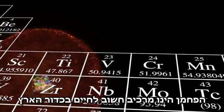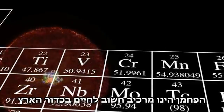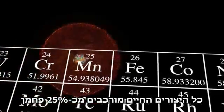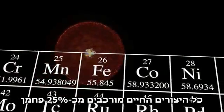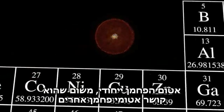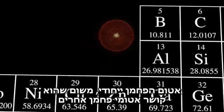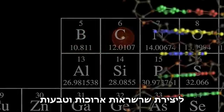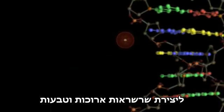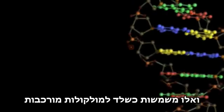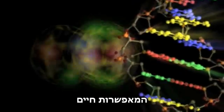Carbon is a critical ingredient for life on Earth. All living things are made up of about 25% carbon. The carbon atom is unique because it can bind to other carbon atoms to form long chains and rings, and these in turn serve as the backbone of complex molecules that make life possible.